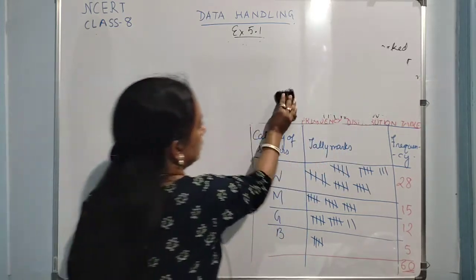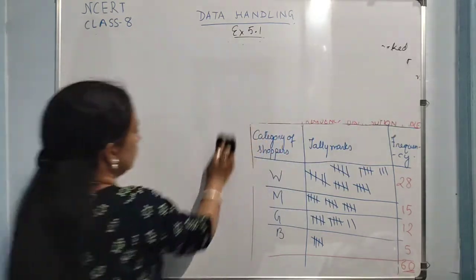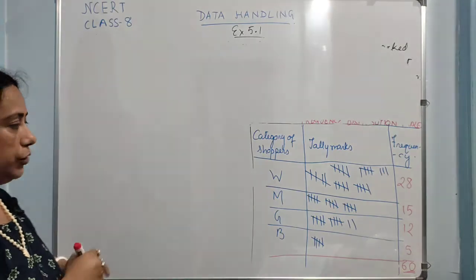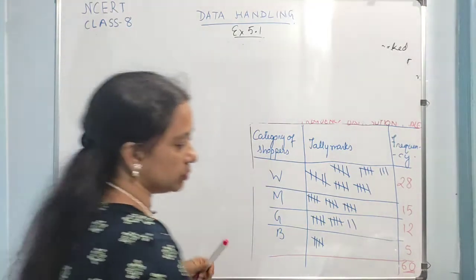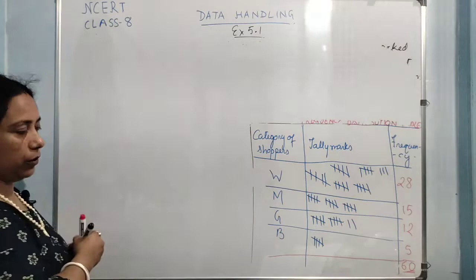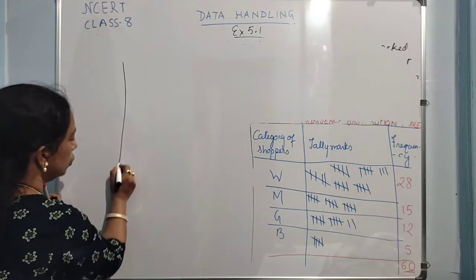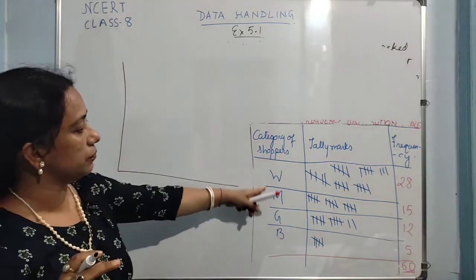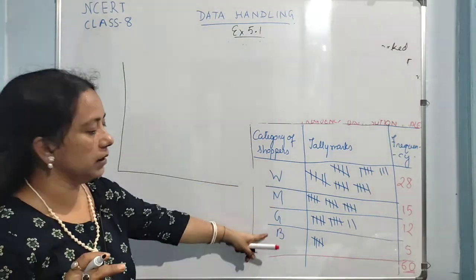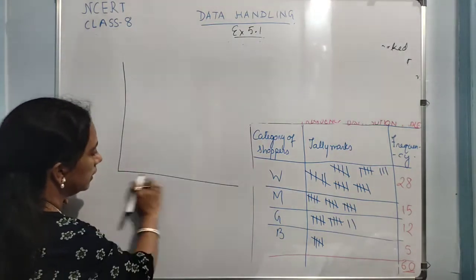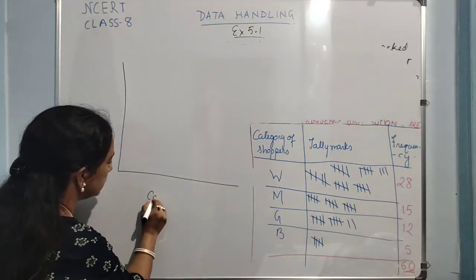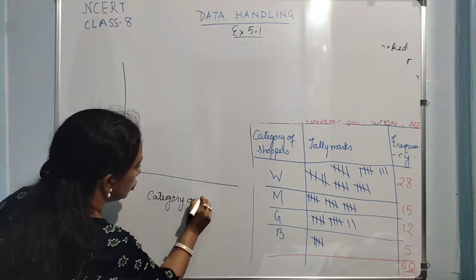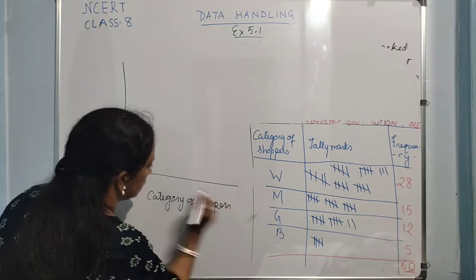Here I am just rubbing this part and will show you — though without graph paper, you need to do this on graph paper only. Here I am showing you how to draw the bar graph. What are the different categories of people? Women, man, girl, and boy. Here in the horizontal axis we will write 'category of shoppers'.